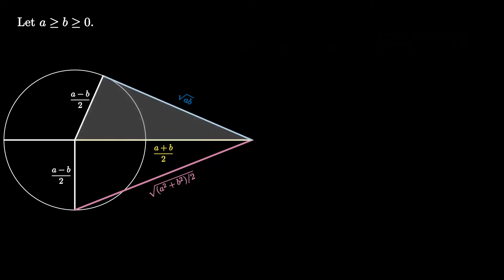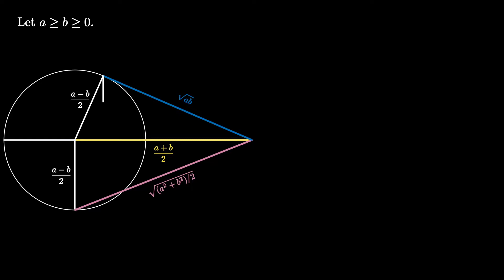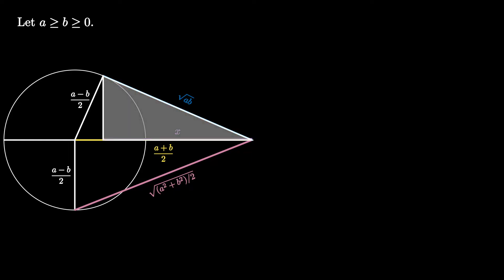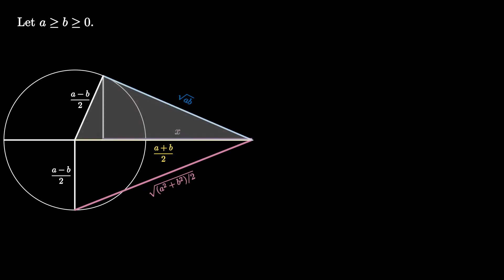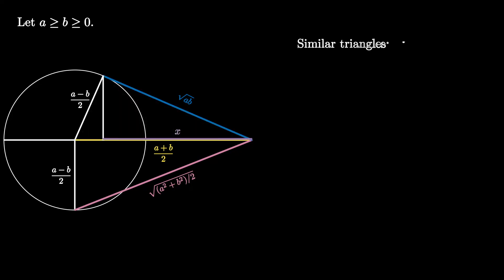Finally, drop a perpendicular from the tangent point on the circle to the extended line segment. One of the newly created triangles in the subdivision is similar to the original triangle. We can see that they are similar because they are both right triangles and they share one of the other angles. Using the similarity of these triangles, we can find that the leg labeled x satisfies the equality: x over the square root of (a times b) equals the square root of (a times b) over (a plus b) over 2. We can solve for x to see that x equals 2 times a times b over (a plus b).